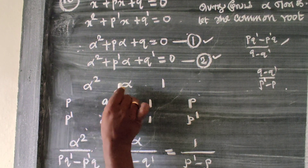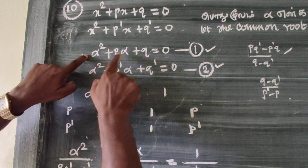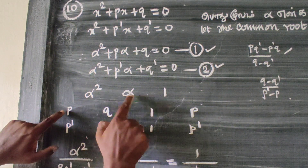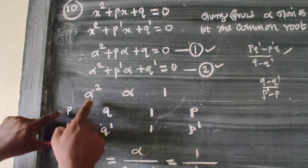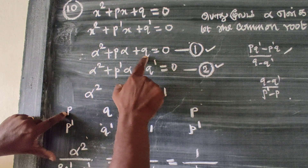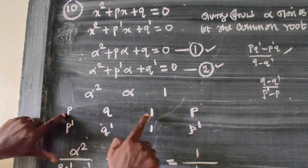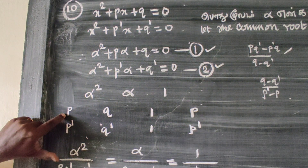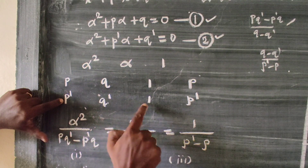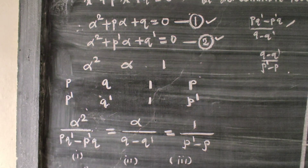Alpha squared, alpha, 1. Now we have to solve this. Let's say 1, P, Q — using the cross-multiplication method with coefficients 1, P, Q and 1, P, Q. We will solve it easily.